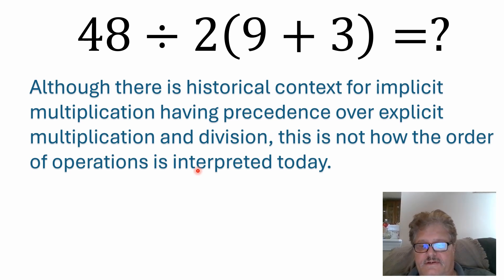The first thing here is there is some historical context for implicit multiplication having precedence over explicit multiplication and division. But it's really not how the order of operations is interpreted today. I know in North America, in the educational system, in the US, they really stress PEMDAS being multiplication and division have equal precedence, and they really don't differentiate between implicit multiplication by juxtaposition. And I'm meaning what we've got here, where you have this 2 outside of the parentheses. They don't distinguish between that and explicit multiplication. And what I mean by explicit multiplication would be if I actually had a multiplication sign here.